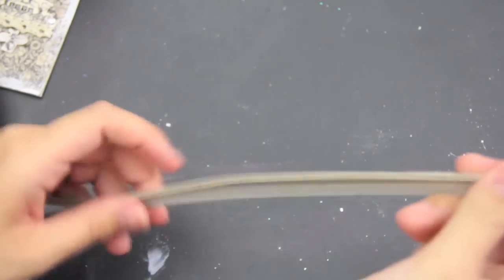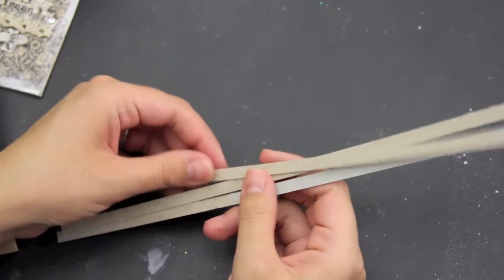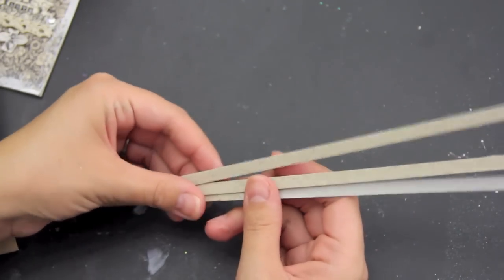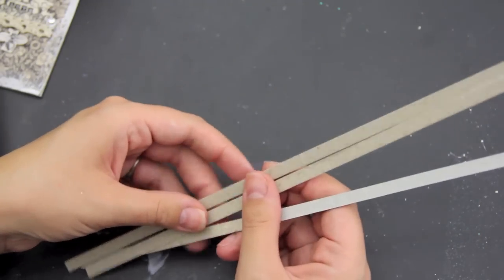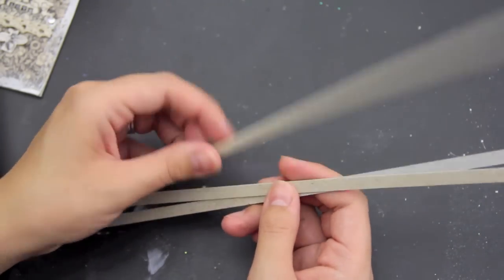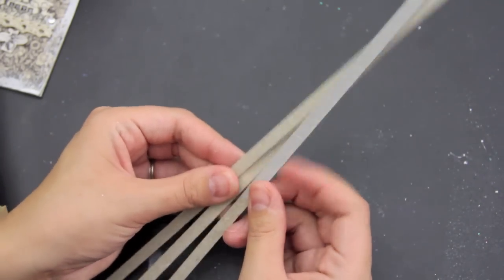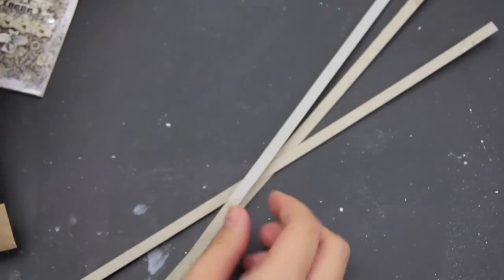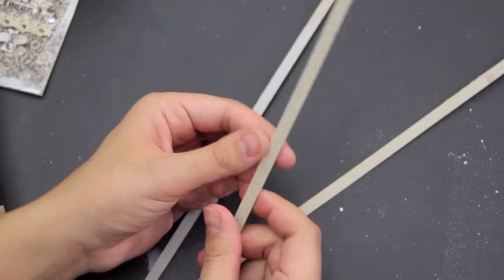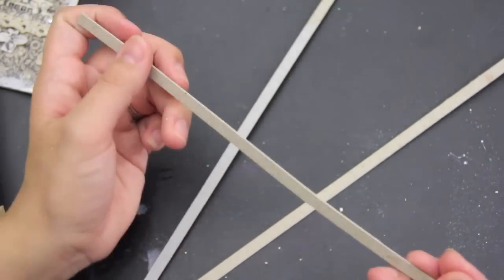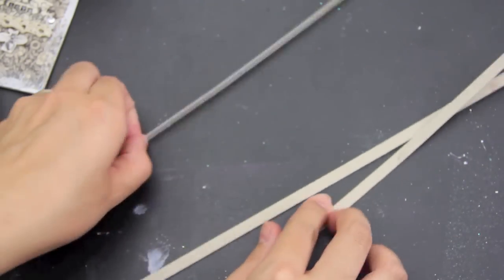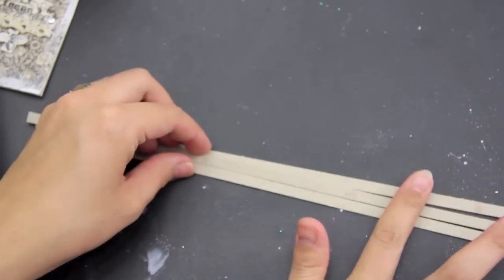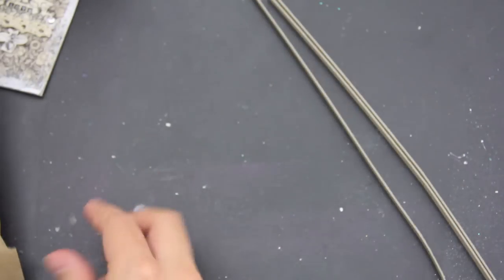What you're going to need is three strips of chipboard or maybe cardboard from like a cereal box that you can layer to make the dimension. This is about a quarter of an inch by twelve inches. You're going to cut them in fours.